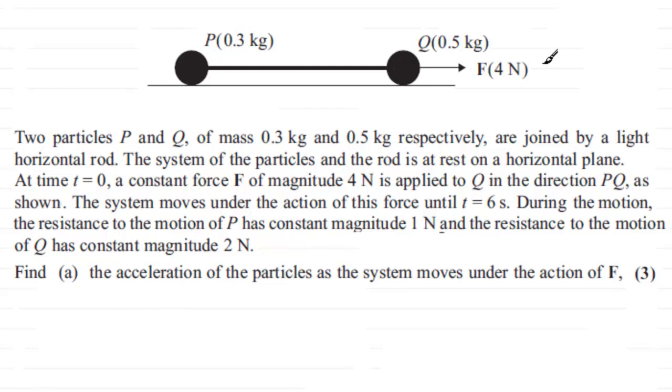The system moves under the action of this force until t equals 6 seconds. During the motion, the resistance to the motion of P has magnitude 1 newton and the resistance to the motion of Q has a constant magnitude of 2 newtons. There's quite a few parts to this question. I'm just going to look at part A where we've got to find the acceleration of the particles as the system moves under the action of force F.